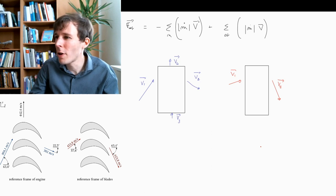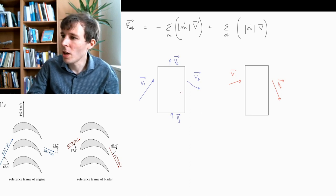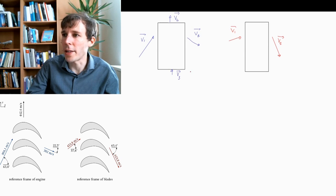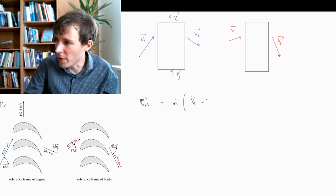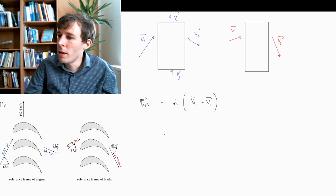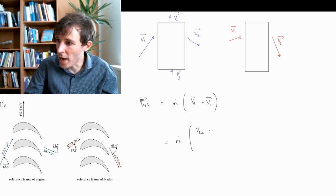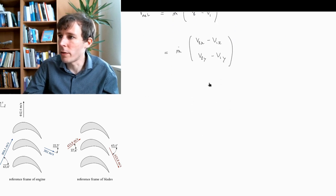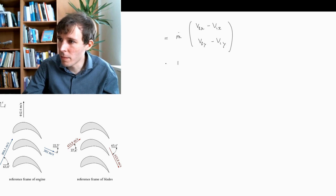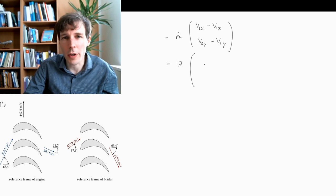If you have nothing to do on a rainy Saturday afternoon, you can try the left control volume and you will get exactly the same result. So let's work out the math for the control volume on the right. The net force equals the mass flow multiplied by vector V2 minus vector V1. Each of those vectors has two components, so we write this as M-dot multiplied by (V2x − V1x) in the x-direction and (V2y − V1y) in the y-direction. The mass flow is 1.7 kg per second, and now we work out the components of velocity.